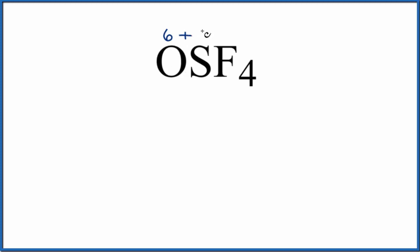Plus sulfur is right below oxygen, it has 6. Fluorine has 7 valence electrons, but we have 4 of those. We're going to multiply that by 4, add all this up, we'll get a total of 40 valence electrons for the OSF4 Lewis structure.